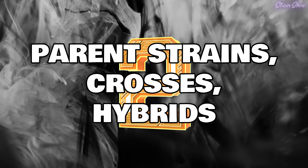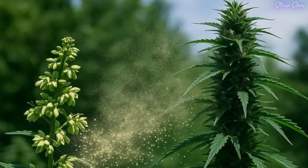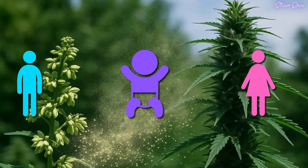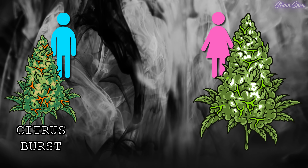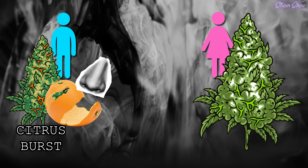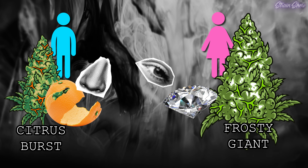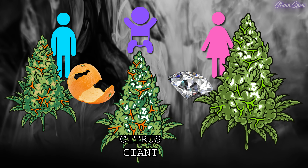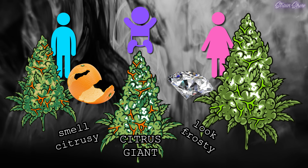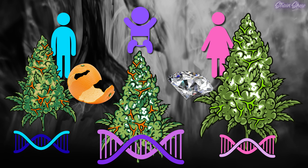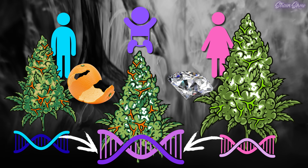We all have that cousin. Also at the top of the list are parent strains, crosses, and hybrids. Every strain starts with two parents — a male and a female — and their offspring is called a cross or a hybrid. If I were to cross a fake strain called citrus burst, something that smells like orange peels, with another strain called frosty giant that's huge and covered in resin, their offspring might smell citrusy, look frosty, and grow somewhere in between. That's a hybrid — a mix of both parents' genetics.